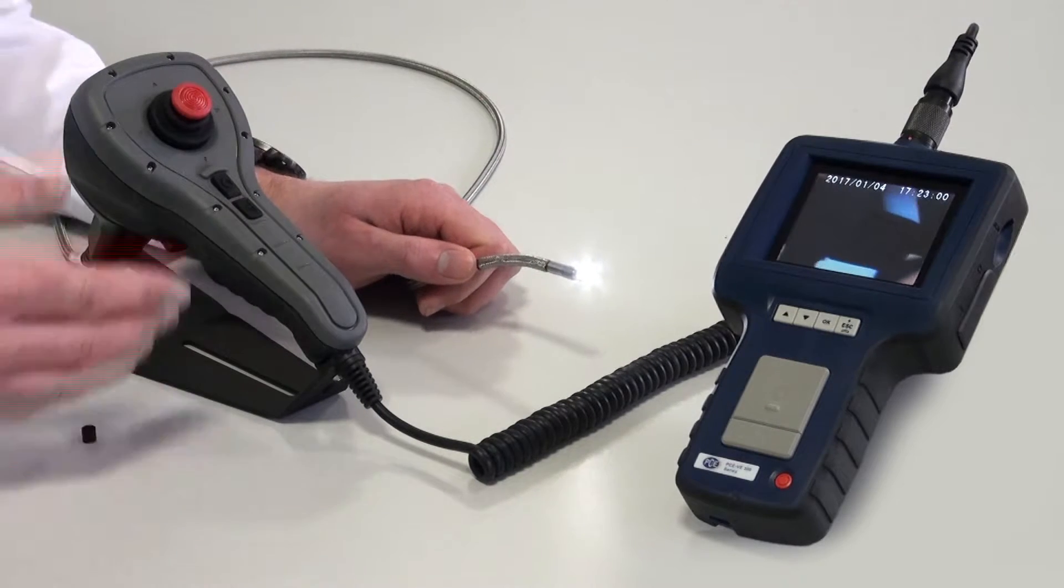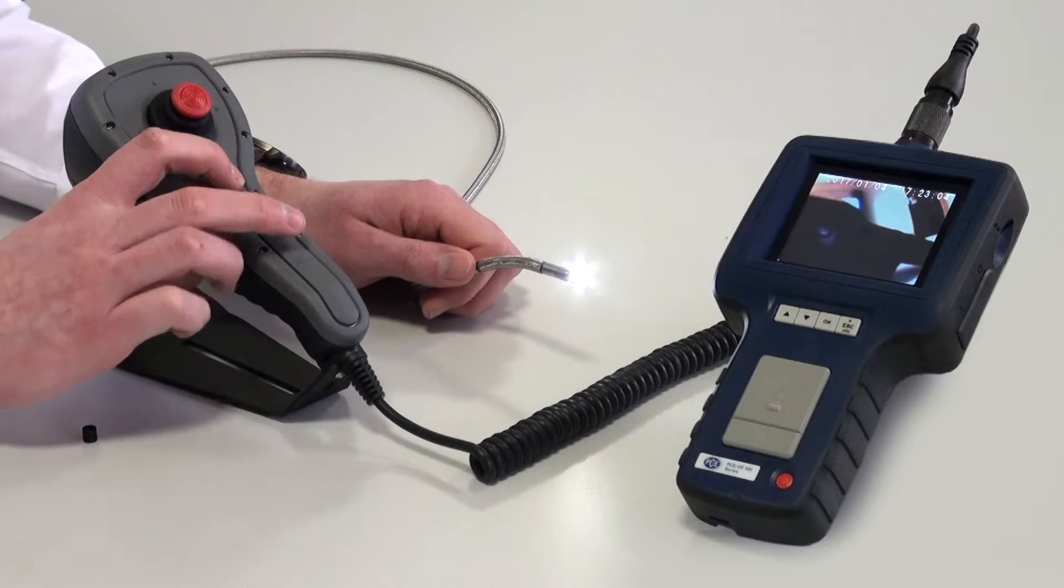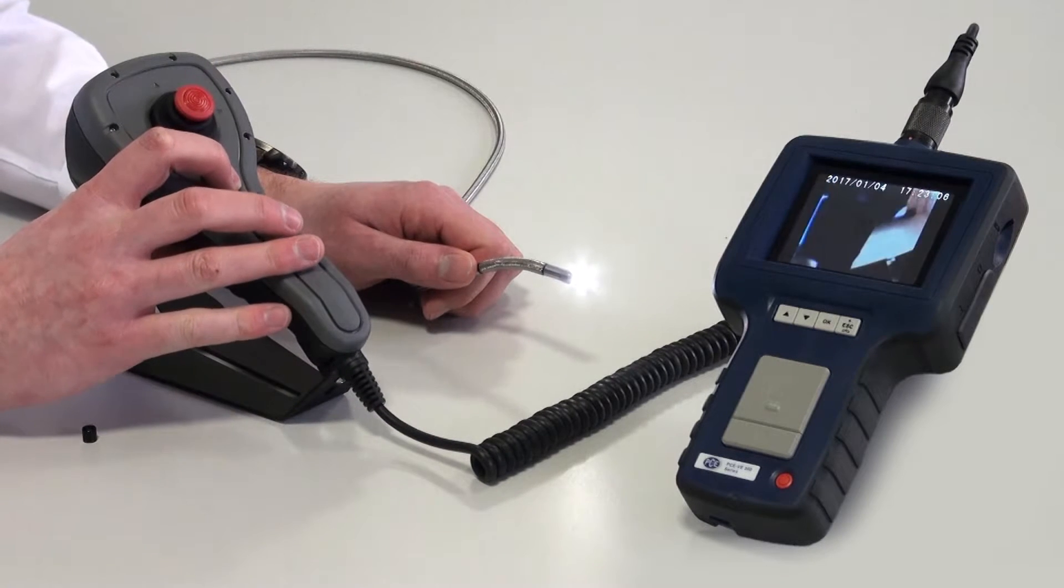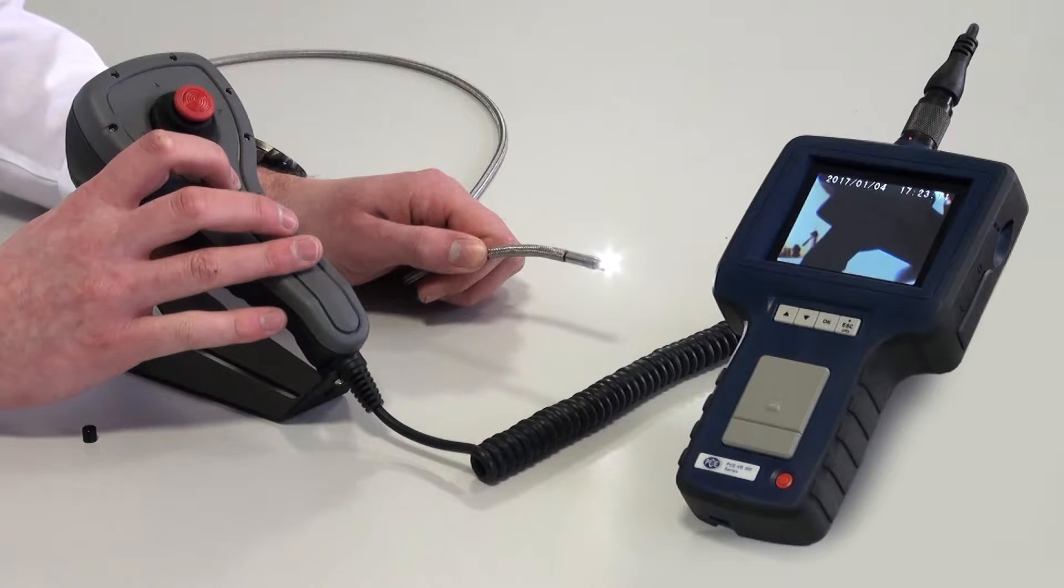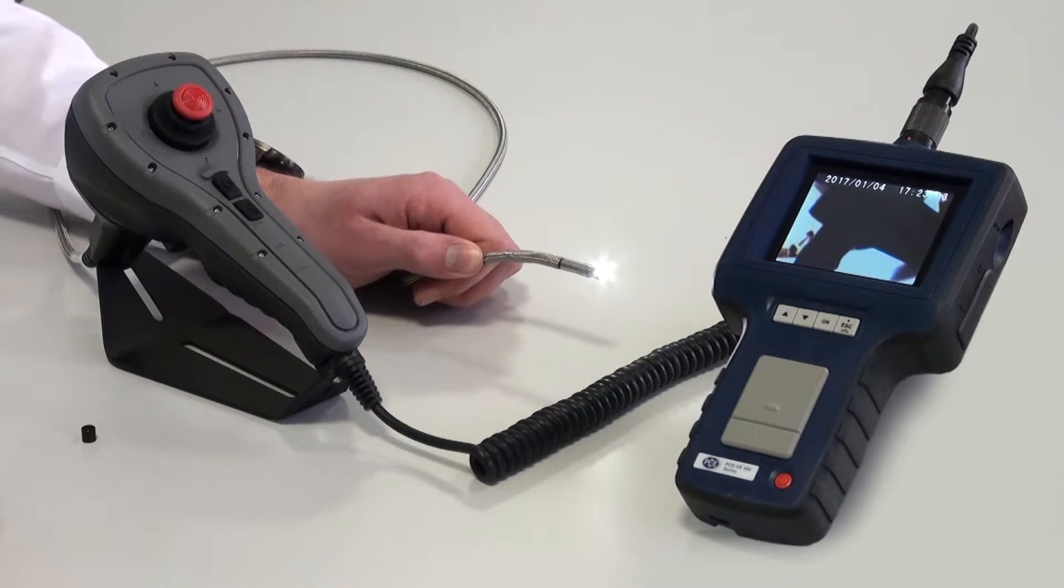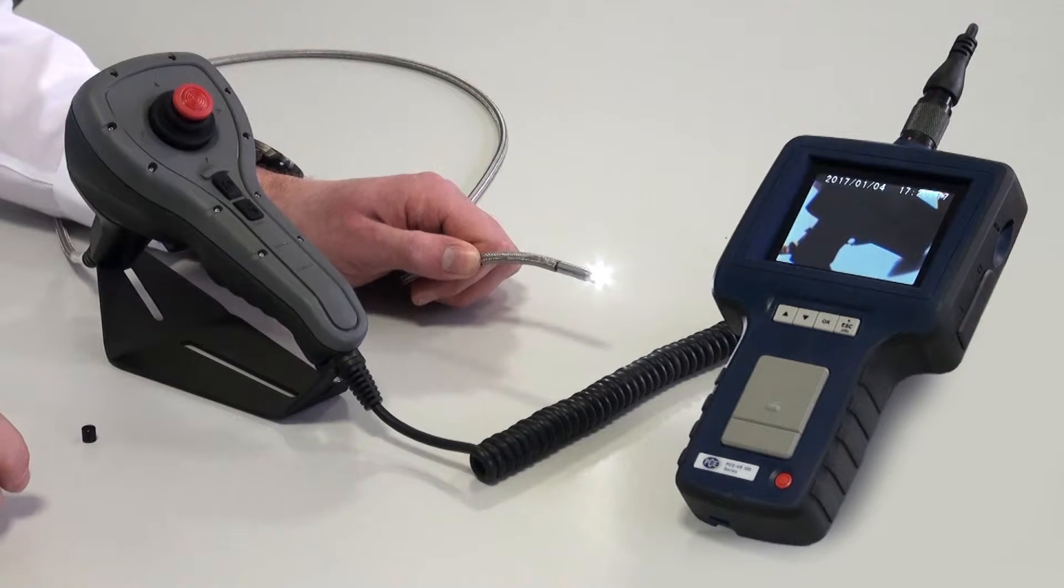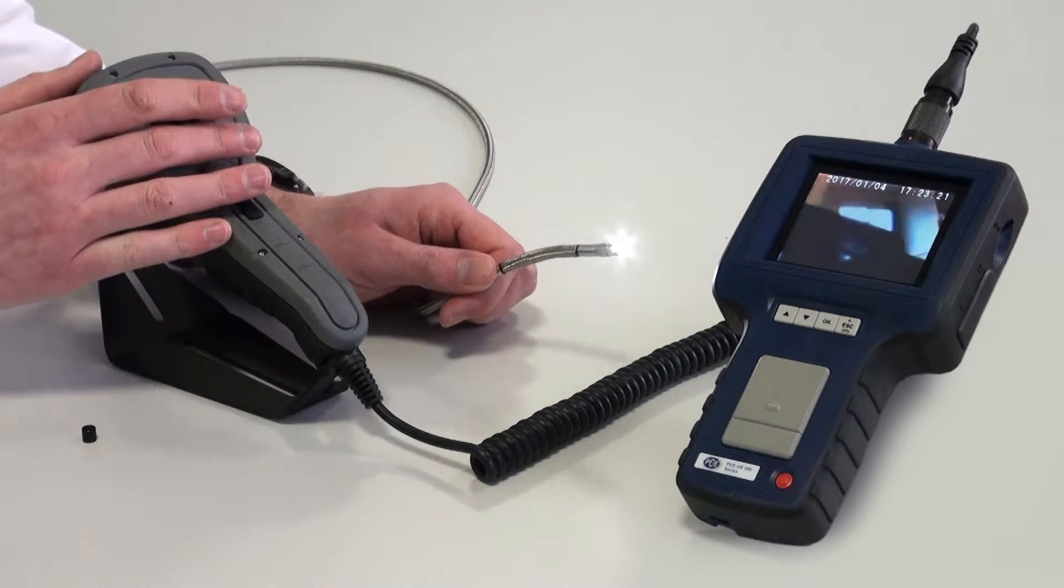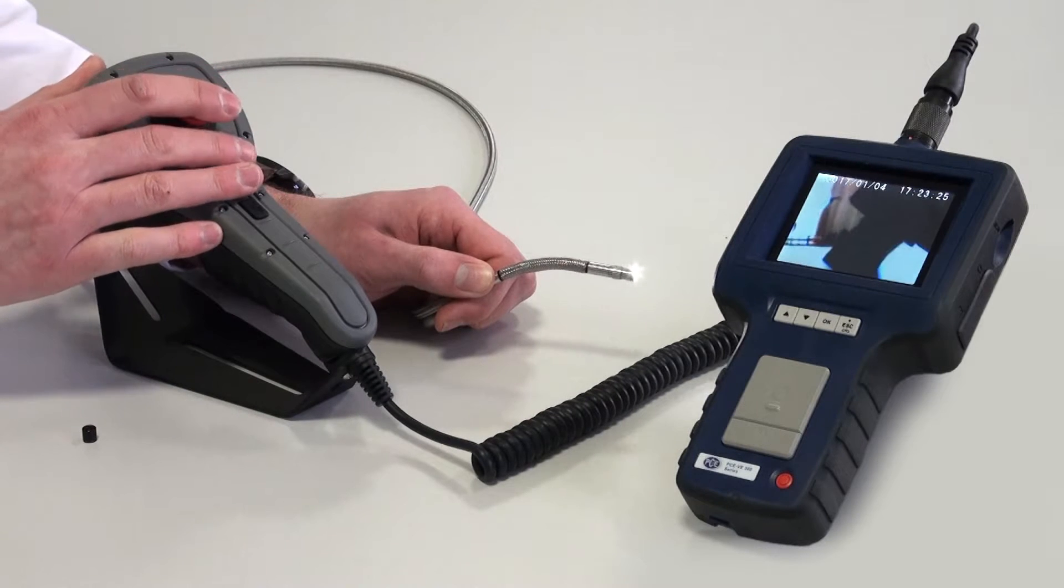Also this joystick of the PCVE370 offers other functions, and that is that the picture can be turned clockwise. When you have pushed the button four times, you are back to the original start picture. The special function of this endoscope is that we have a four-way camera head, which is moved using a joystick, and then can be moved in four directions.